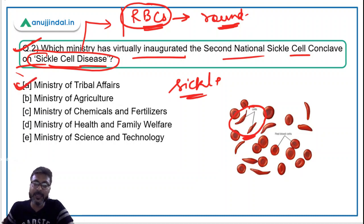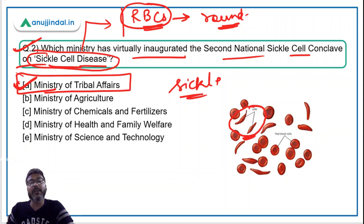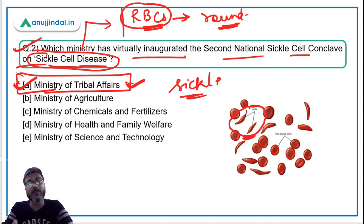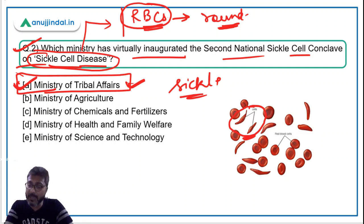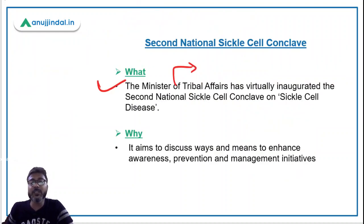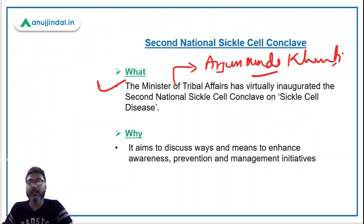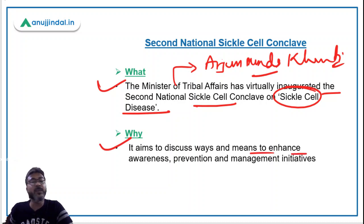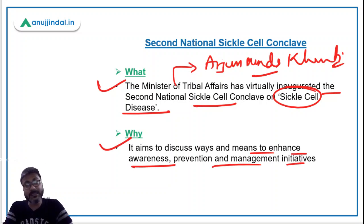The second National Sickle Cell Conclave has been inaugurated by the Ministry of Tribal Affairs. The reason the Ministry of Tribal Affairs is involved is because sickle cell disease is very prominent among tribal people. The Minister of Tribal Affairs is Arjun Munda, whose Lok Sabha constituency is Khunti in Jharkhand. He has virtually inaugurated the conclave, which aims to discuss ways and means to enhance awareness, prevention, and management initiatives regarding this disease.